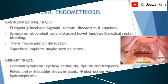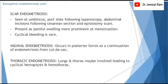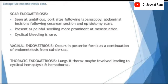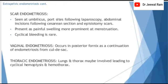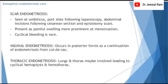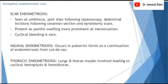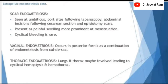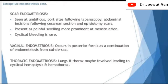Urinary tract endometriosis may cause obstruction and hydronephrosis. Scar endometriosis is seen at the umbilicus, port sites following laparoscopy, abdominal incisions following caesarean section, and episiotomy scars, presenting as painful swelling more prominent at menstruation; cyclical bleeding is rare. Vaginal endometriosis occurs in the posterior fornix as a continuation from the cul-de-sac. Thoracic endometriosis involves the lungs and thorax, leading to cyclical hemoptysis and hemothorax.